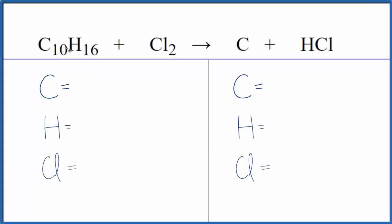In this equation we have C10H16 plus Cl2. So we have this hydrocarbon and this chlorine gas. So let's count the atoms up and balance the equation.